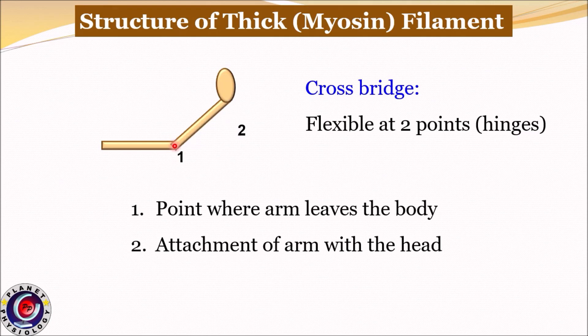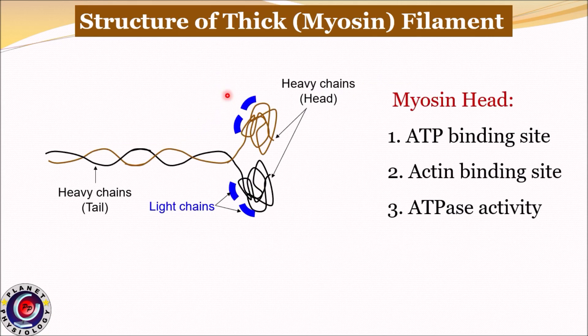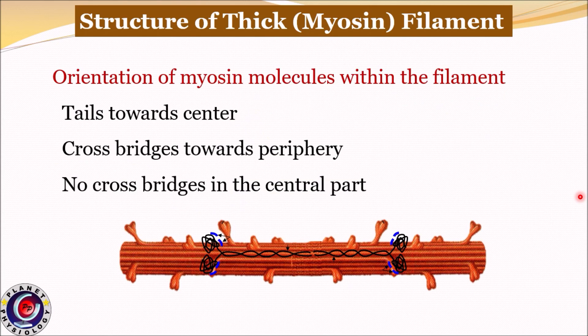The first hinge is where the arm leaves the body of the filament, and the second is where the head attaches to the arm. The myosin head has binding sites for actin as well as ATP, and also possesses ATPase activity. Myosin molecules are oriented symmetrically such that their tails are towards the midline and cross bridges are towards the periphery. This is the reason for the absence of cross bridges in the center of the sarcomere.